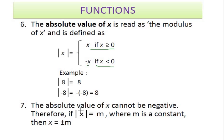The absolute value of x cannot be negative. Therefore, if |x| = m, where m is a constant, then x is equal to plus or minus m. You can look at the example here.